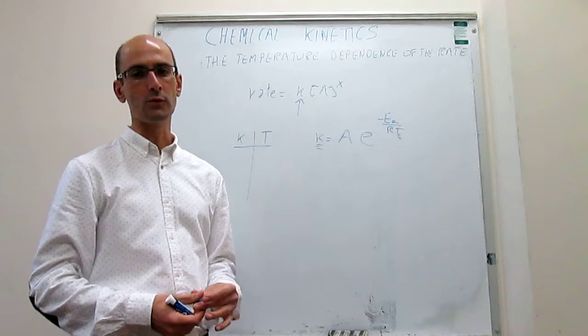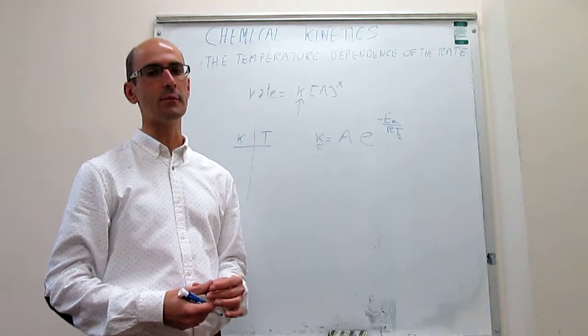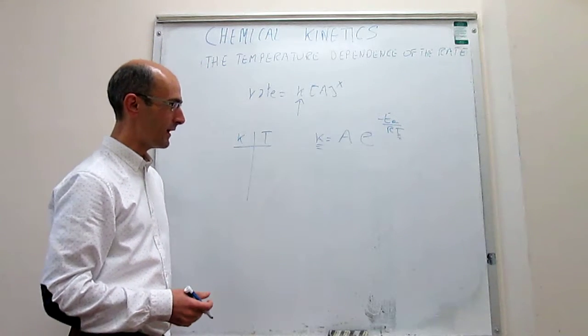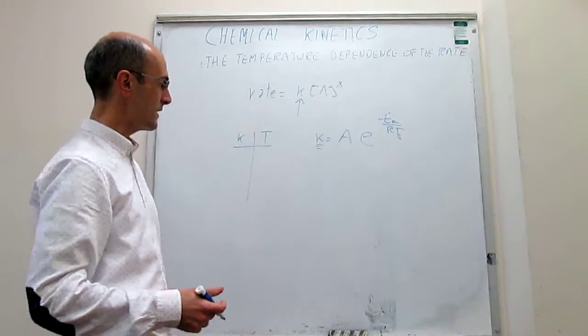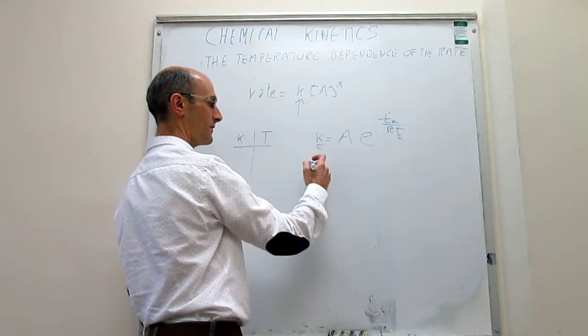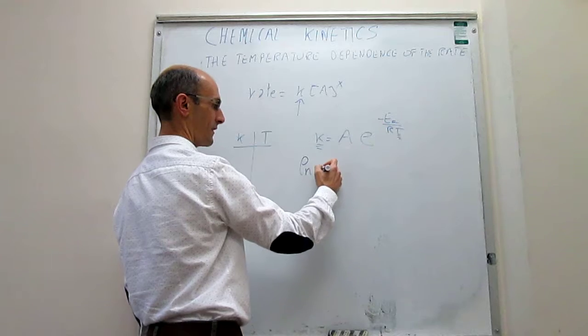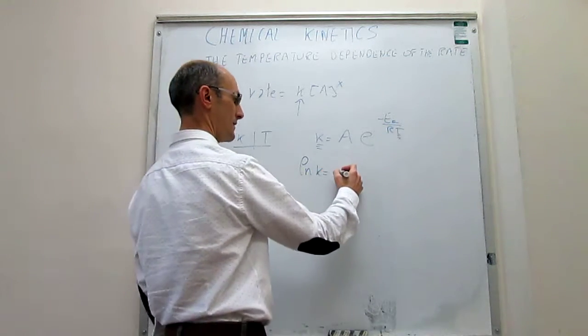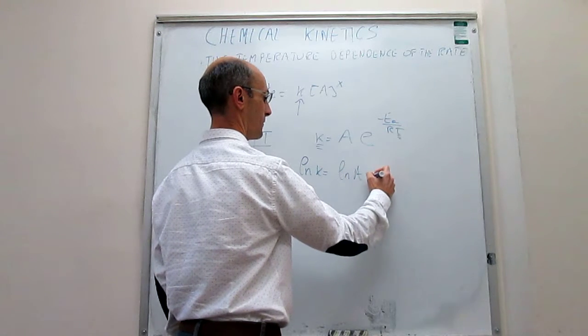Even though we'll talk about this to a much deeper extent in the next chapter. Now, before we actually explain what A and the activation energy are, we're going to say that this expression can be linearized by taking logarithms, in this case the natural logarithm, and notice that this expression is going to turn into the following: